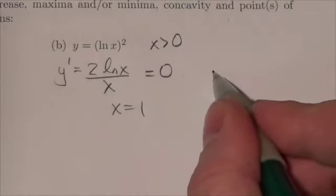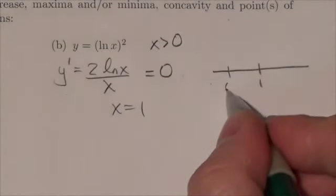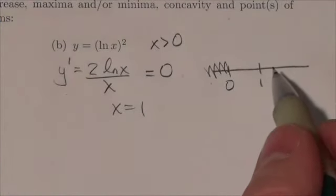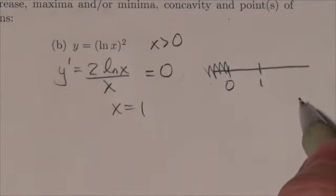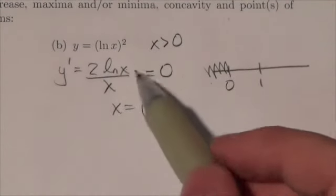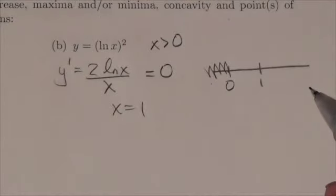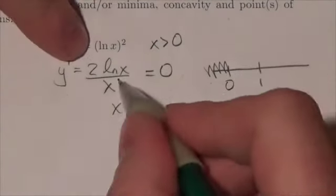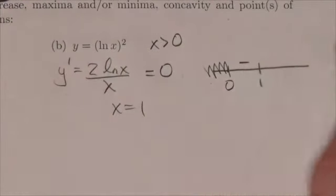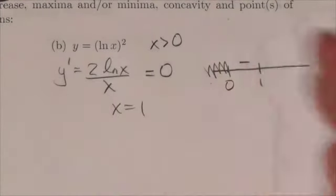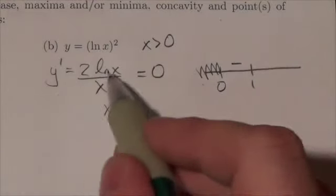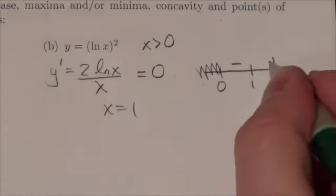So now we can take a quick look at the interval here. Now here's 0. There's nothing going on to the left of that. Let's just take a quick look here. Choose a number less than 1. Well, when you do that, the natural log is going to become negative. The x is still going to be positive. So that's going to be 2 times the negative over a positive. That'll be negative. And if you choose a value greater than 1, the natural log will be positive over a positive value times 2. It'll be positive.